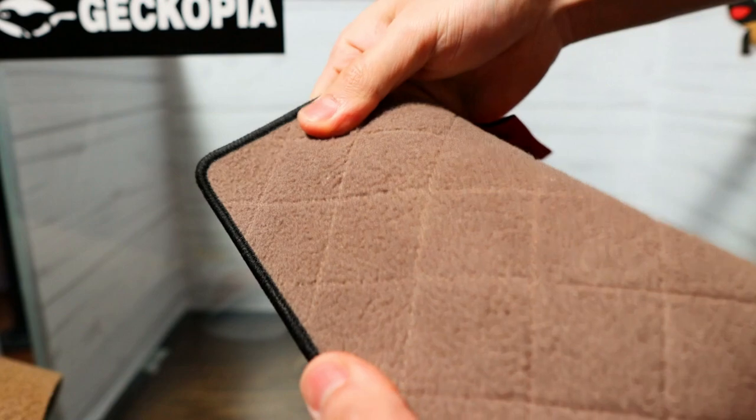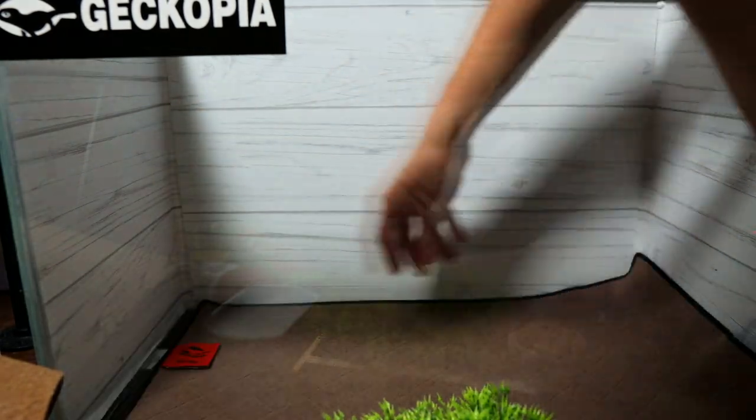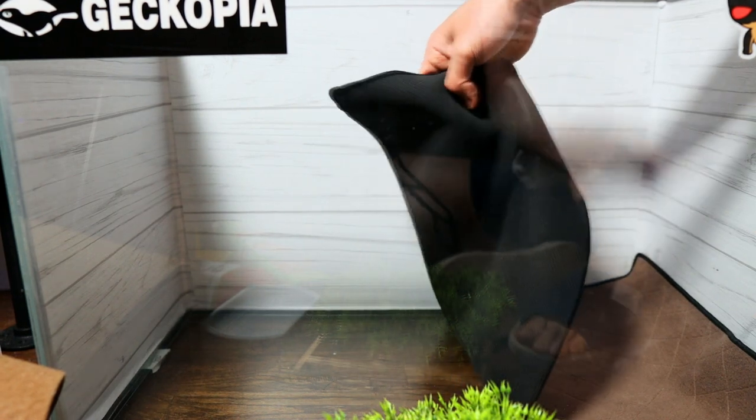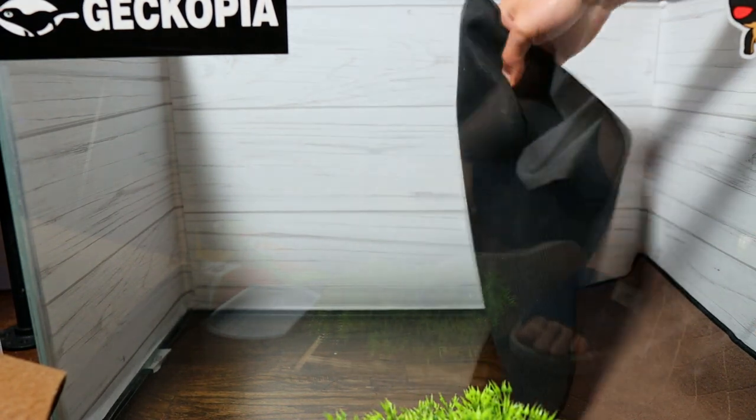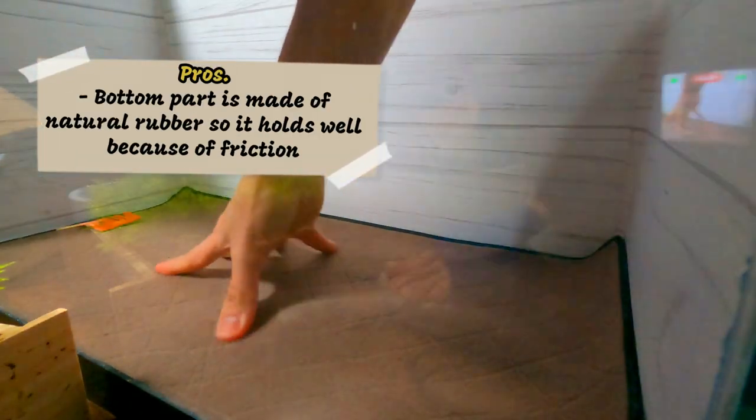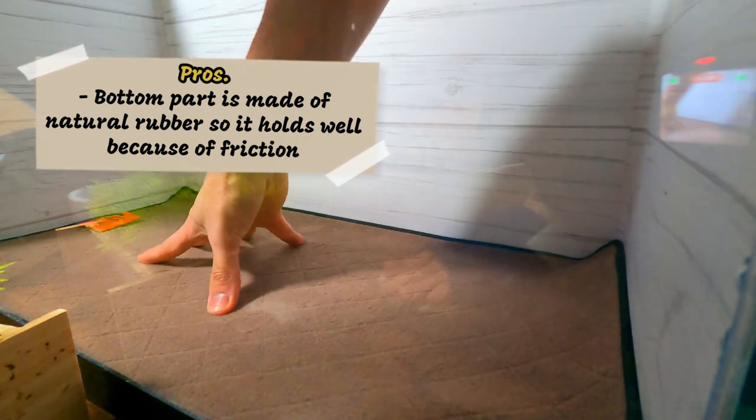So even if they hunt from this liner they will be super safe because it's super soft and there's no way for it to get stuck. And the other part which I just went over, I made the bottom part right here. You see this black color? I made this with natural rubber so it holds the liner pretty well.